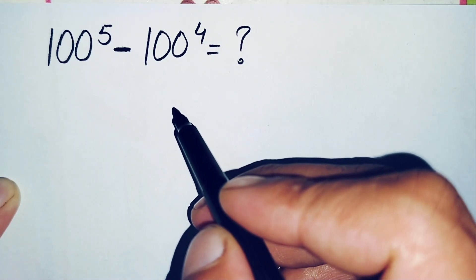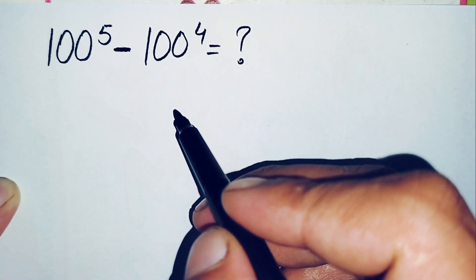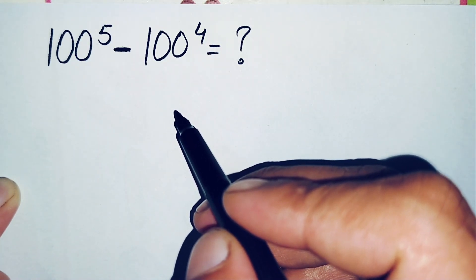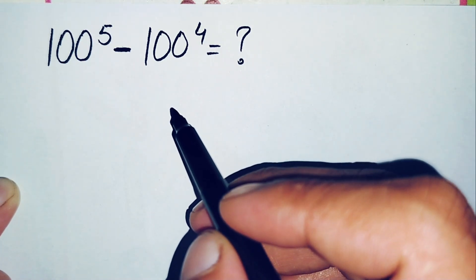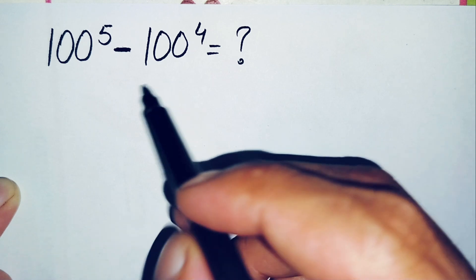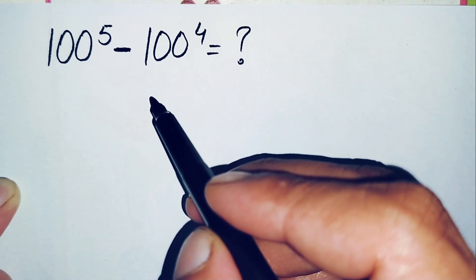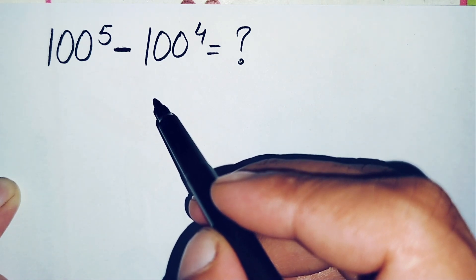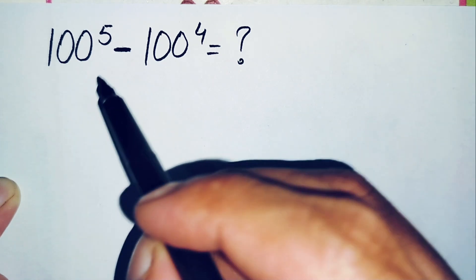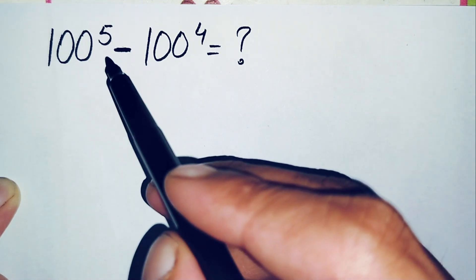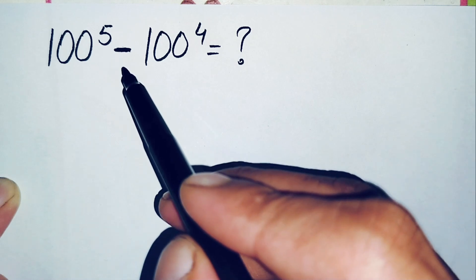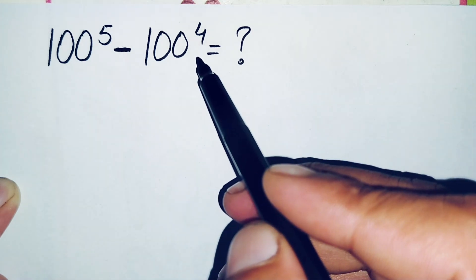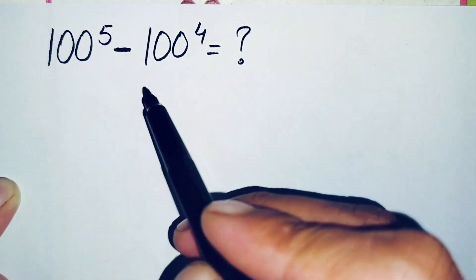Hello everyone, you are welcome to Math Explorer. In this video I'm going to solve and find the value of this amazing exponential simplification math problem, which is 100 to the power 5 minus 100 to the power 4.